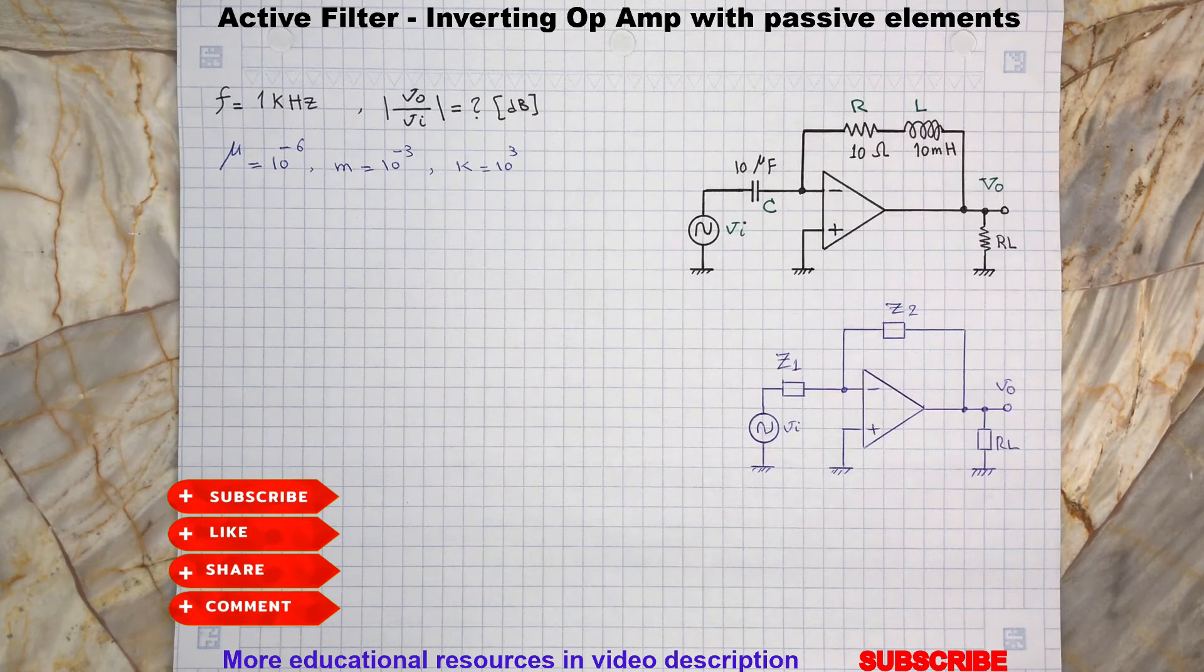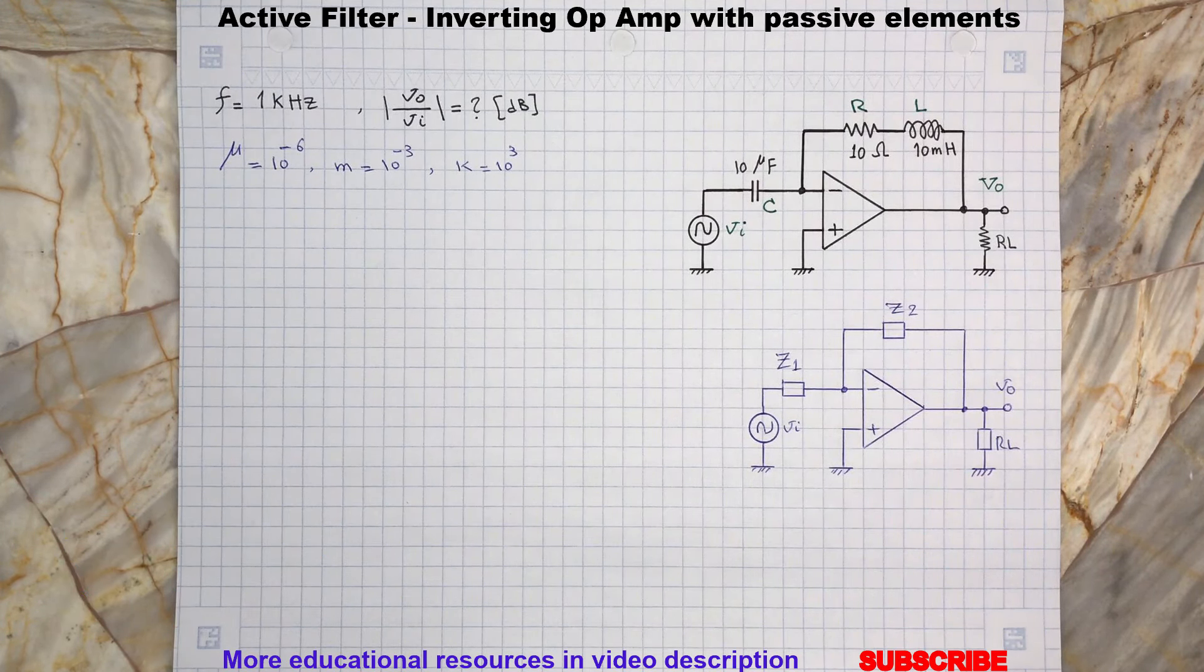Hello and welcome back to another op-amp circuit analysis. Today we are going to review this inverting amplifier and determine the circuit voltage gain VO to VI in decibel, where VI is a sinusoidal signal at frequency of 1 kilohertz.